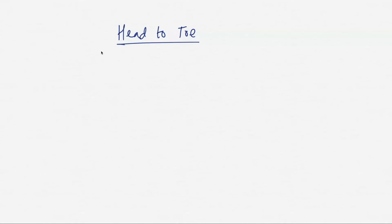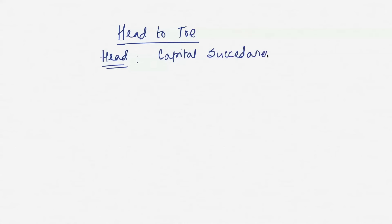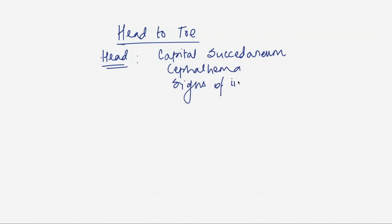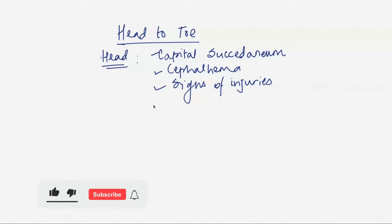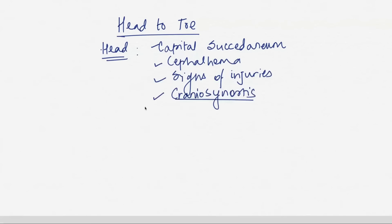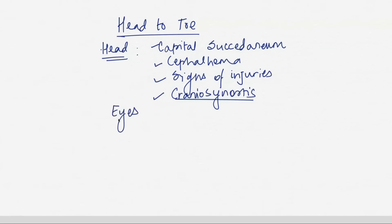In the head, you check for deformities such as caput succedaneum and cephalhaematoma. If it was an instrumental delivery, you check for signs of injury. You also check for craniosynostosis — premature fusion of the cranial sutures. In an online exam, you can mention hypothetical conditions and talk about what you would look for in each scenario.